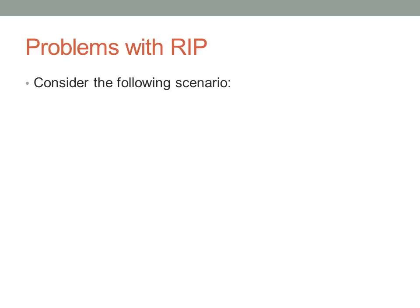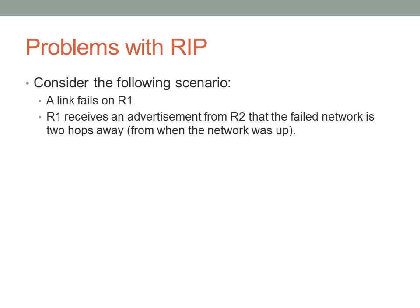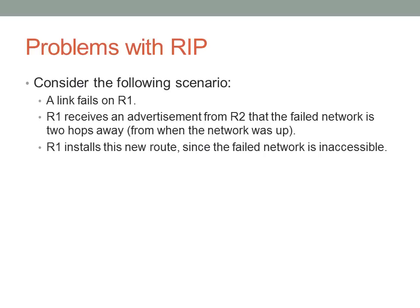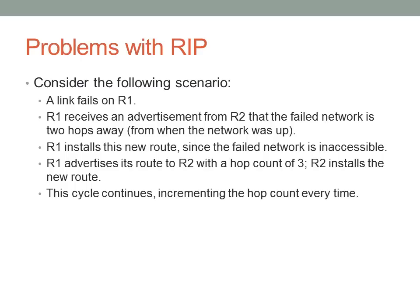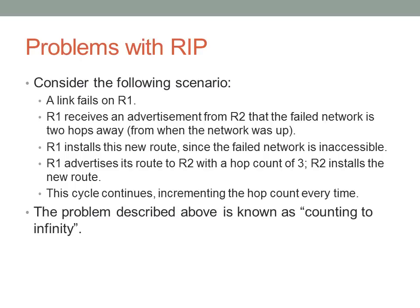Here are some problems associated with RIP. Consider a link failure on one router. Router 1 receives an advertisement from Router 2 that the failed network is two hops away. When the network was up, Router 1 received the route directly from Router 0. Now that the link is down, it receives an advertisement from Router 2 saying the network is two hops away. Router 1 installs a new route and advertises it to Router 2 with a hop count of 3. Router 2 then sees the advertisement with hop count 3, installs the new route, and the cycle continues until one of them hits hop count 16. Once the route is advertised as unreachable, it gets removed — but this takes quite a while. This problem is known as the counting to infinity problem.